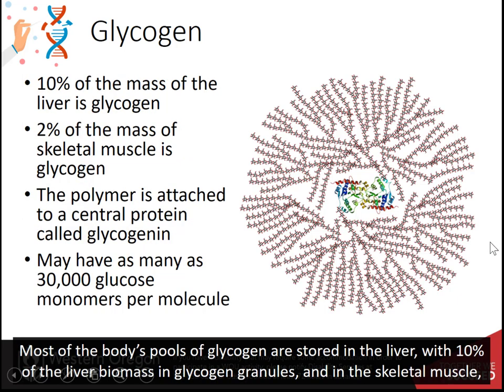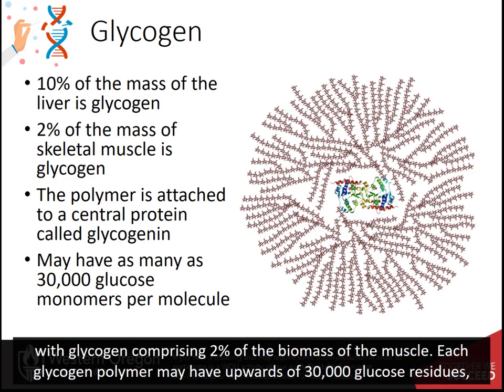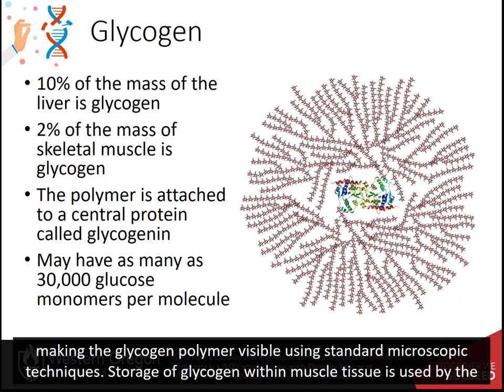Most of the body's pools of glycogen are stored in the liver, with 10% of the liver biomass in glycogen granules, and in skeletal muscles, with glycogen comprising 2% of the biomass of the muscle. Each glycogen polymer may have upwards of 30,000 glucose residues, making the glycogen polymer visible using standard microscopic techniques.